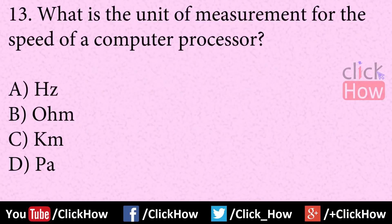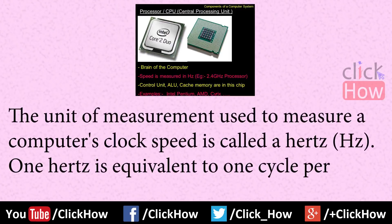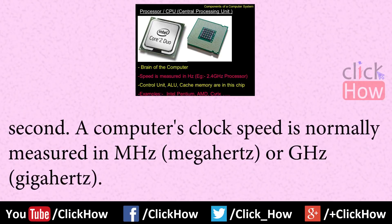Question number 13: What is the unit of measurement for the speed of a computer processor? Answer is option A, Hertz. The unit of measurement used to measure a computer's clock speed is called Hertz. One Hertz is equivalent to one cycle per second. A computer's clock speed is normally measured in megahertz or gigahertz.